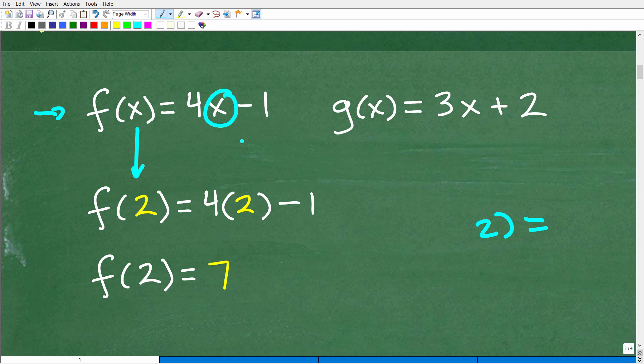Well, what we're going to do is replace the x with a 2. Okay, so anywhere I see an x in my little function rule right here, I'm going to plug in a 2. And then I'm going to just simplify the result. So 4 times 2 is 8, 8 minus 1 is 7. So f(2) is equal to 7.